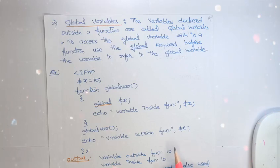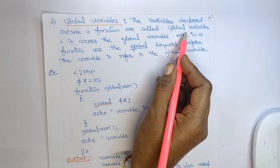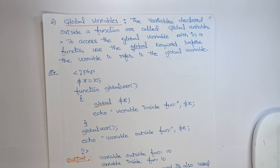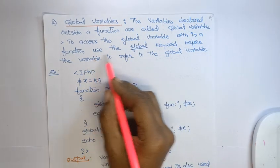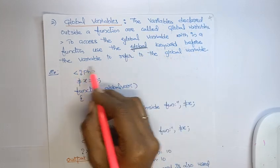Now we will see global variables. Global means the variables declared outside of the function are called global variables. To access the global variables within a function, use the global keyword. This you need to remember before the variable to refer to the global variables.